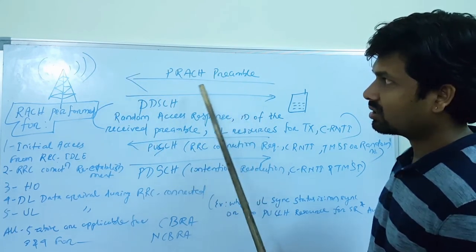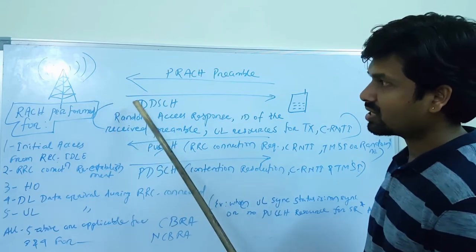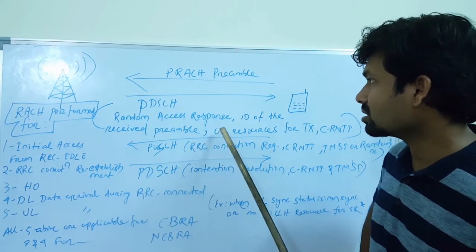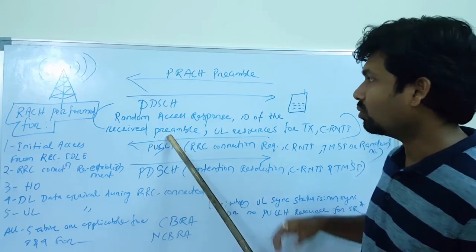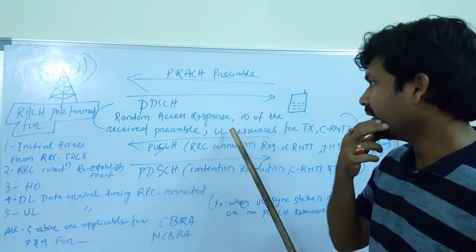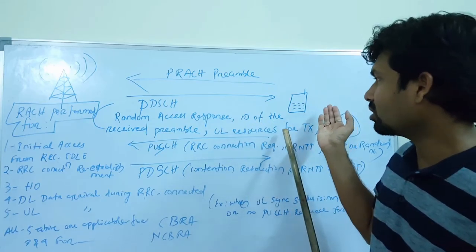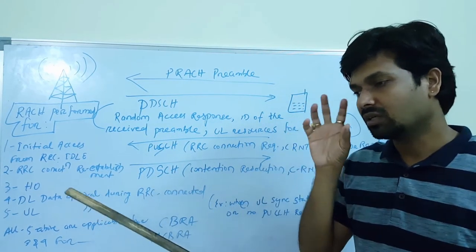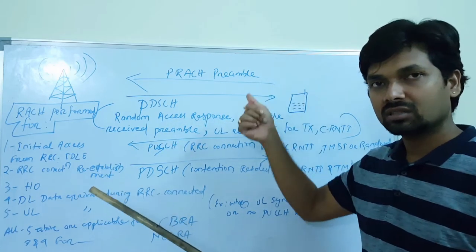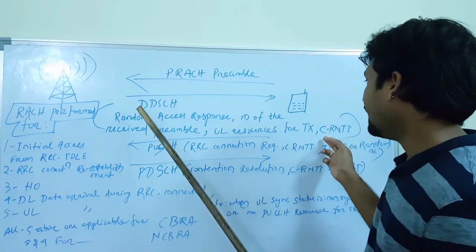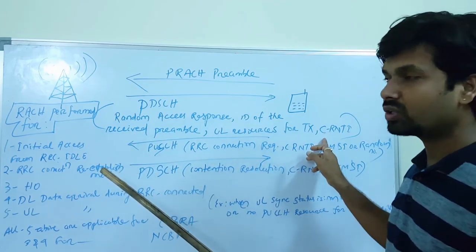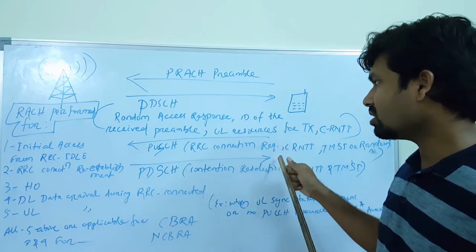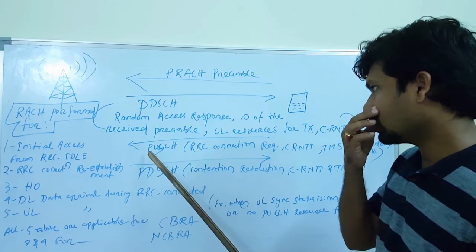Let's understand the call flow. The UE sends a PRACH preamble to the E-NodeB. The E-NodeB then sends a PDSCH — the physical downlink shared channel — which gives a random access response containing the ID of the received preamble, uplink transmission resources indicating on which subframe the UE can transmit the PUSCH, and a temporary C-RNTI.